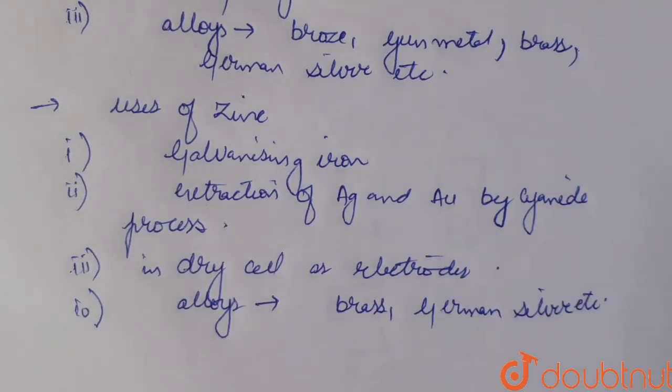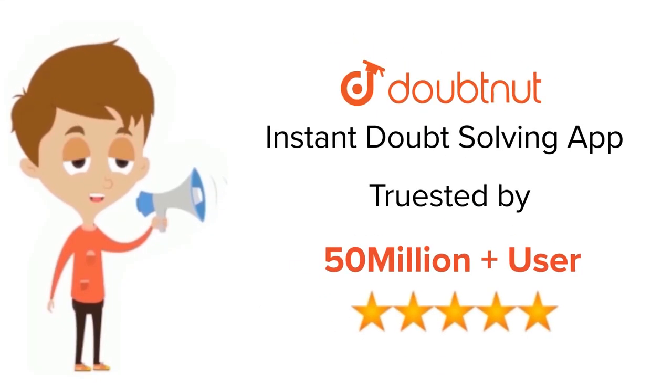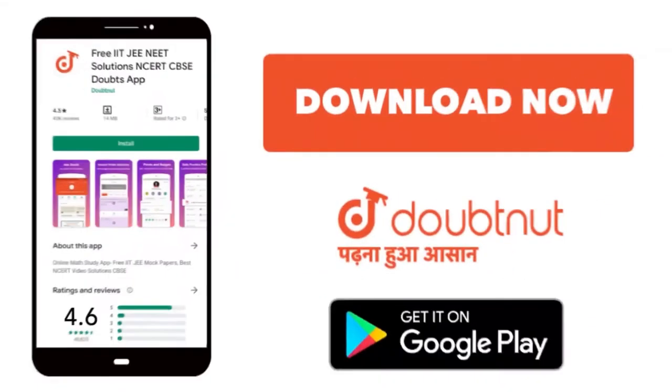These were the various uses of aluminum, copper and zinc. Thank you. For class 6-12, IIT-JEE and NEET level, trusted by more than 5 crore students, download Doubtnet app today.